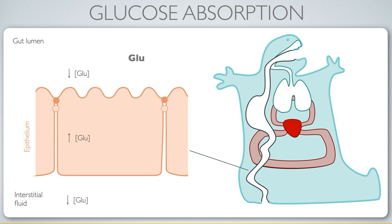We see a relatively high concentration of glucose inside the cell — that's a problem, because we need to move glucose into the interior of the cell, and that's going to require moving it against its chemical concentration gradient.